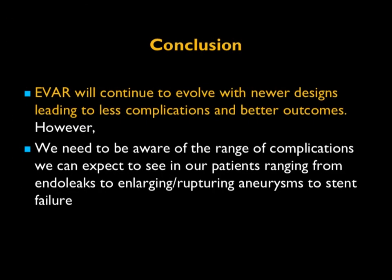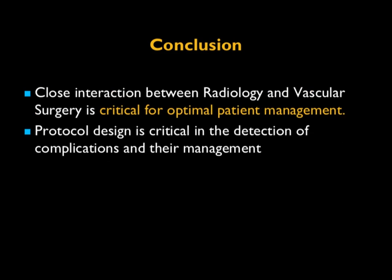Endovascular stent repair continues to evolve with newer stent designs leading to fewer complications and better clinical outcomes. We need to be aware of the full range of findings: from endoleaks to enlarging aneurysms to stent failure and everything in between, including congenital considerations and syndromes such as Ehlers-Danlos. Being able to select the right patient population for stents, judge whether a stent will fit, and perform post-operative imaging to confirm everything is correct is essential. That ends part two of this talk, with the next part coming next Monday.